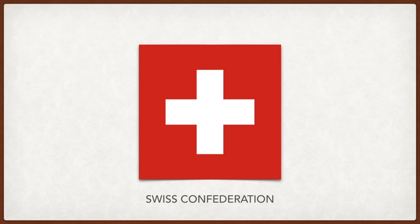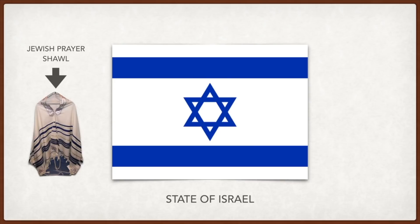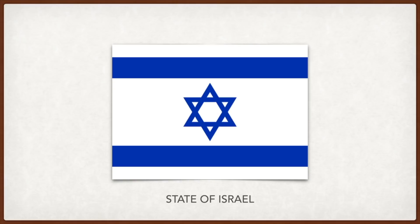Israel: the basic design recalls the Jewish prayer shawl and the star in the center is the Star of David, a symbol widely seen as representative of the Jewish people. The white color represents God's benevolence and the blue color God's glory, purity, and strength.